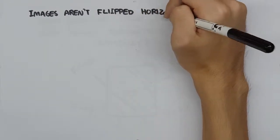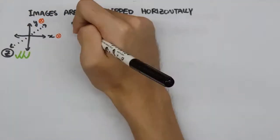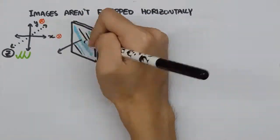Surprisingly, images reflected on a mirror aren't actually flipped horizontally. They are flipped in the axis perpendicular to the mirror's surface.